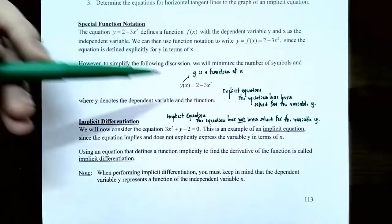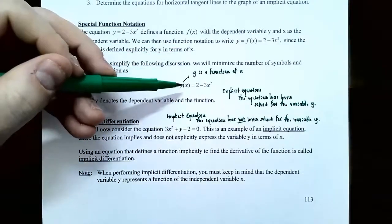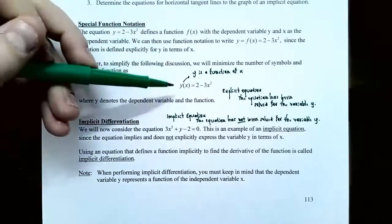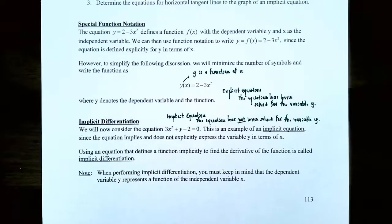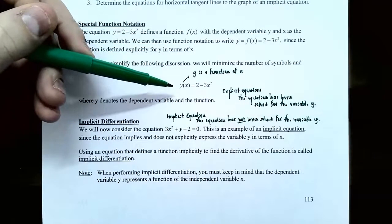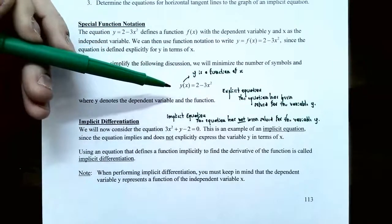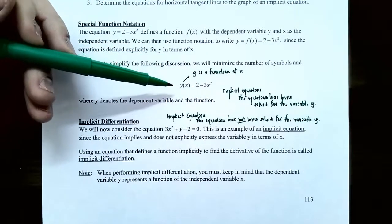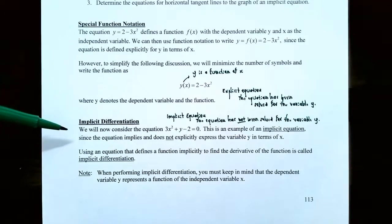Y is a function of x — y is the function's name, the dependent variable, and x is the independent variable. Instead of writing f of x equals 2 subtract 3x squared, we're going to write y of x equals 2 minus 3x squared. What's important is that you remember that y is a function of x. This is an explicit equation because we can get y by itself on one side of the equation. Now that we've talked about special function notation, we're going to talk about implicit differentiation.